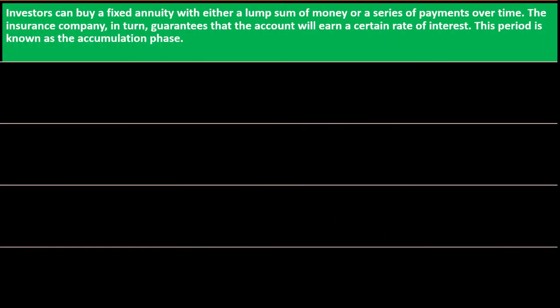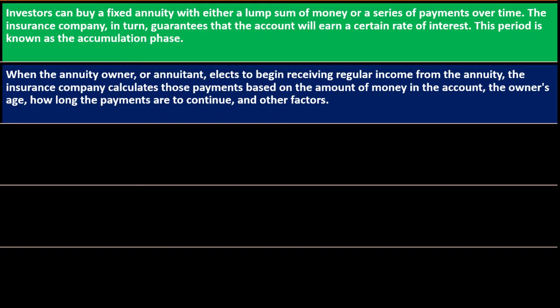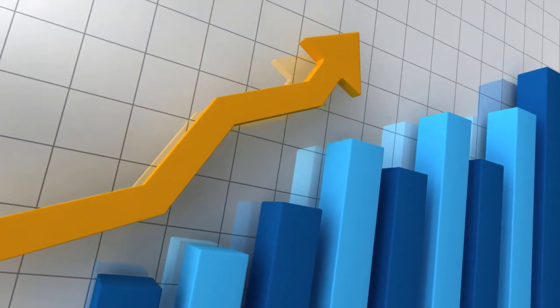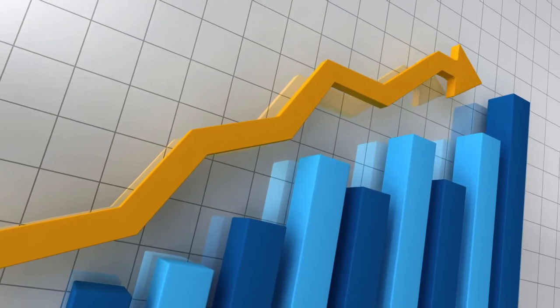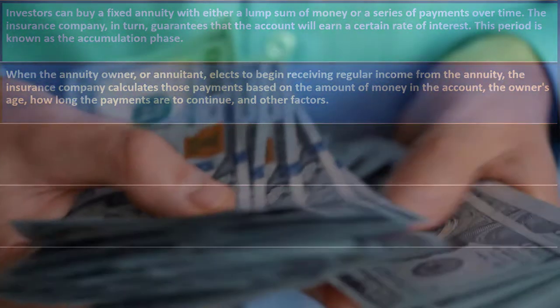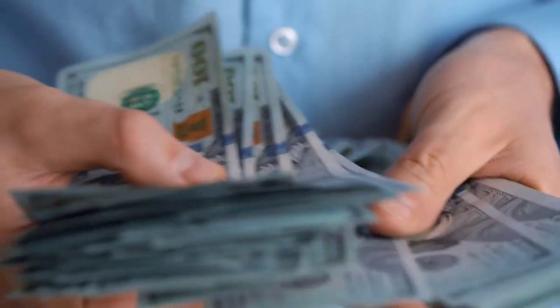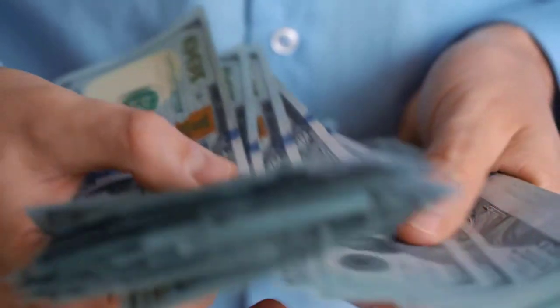This period is known as the accumulation phase. When the annuity owner or annuitant elects to begin receiving regular income from the annuity, the insurance company calculates those payments based on the amount of money in the account, the owner's age, how long the payments are to continue, and other factors. The money coming out will be paid as a series of annuity payments.